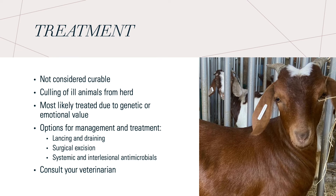When treating CL, it's important to know that it's not considered a curable disease. From a management perspective, the most practical approach is to cull the ill animals from the herd and to try to maintain the other animals away from areas that may have been infected by the bacteria. When an animal is treated, it's likely due to genetic or emotional value if they were pets, for example. There are several options for managing and treating CL that are done for aesthetic reasons and to limit infectivity to the rest of the herd, including lancing and draining, surgical excision, systemic antimicrobials, and interlesional antimicrobials. All of these options should be first consulted with a veterinarian and administered under their care.